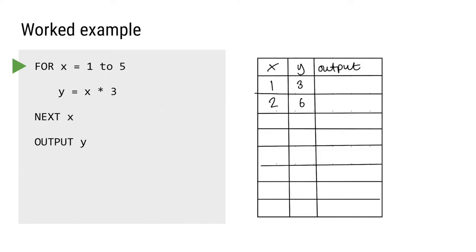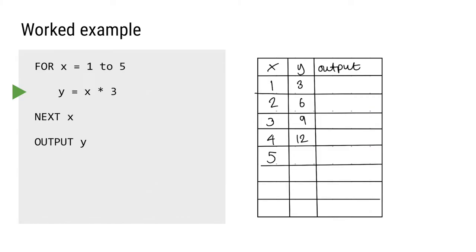We continue around the loop: x is 3, so y is 3 times 3 which is 9. Next, x is 4 and y is 3 times 4 so it's 12. Finally x is 5 and y equals x times 3 which is 15. We don't repeat the for loop again because x has taken all its intended values 1, 2, 3, 4 and 5. So execution jumps down to the output y statement, and the output is the current value of y which is 15. That is the end of the algorithm.